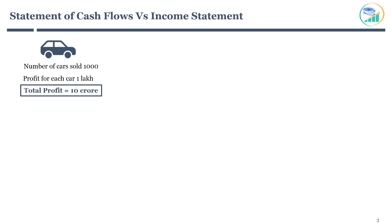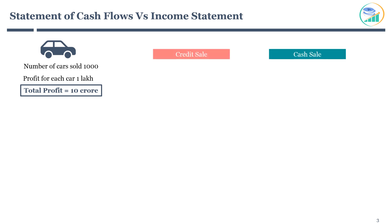In business, all sales don't happen on a cash basis. Few customers will buy a car today but pay cash at a later point in time — this is called a sale on credit. Hence, there are two ways profits are recorded: credit sale and cash sale. Let's assume 400 cars are sold on credit and the remaining 600 cars are sold on cash.